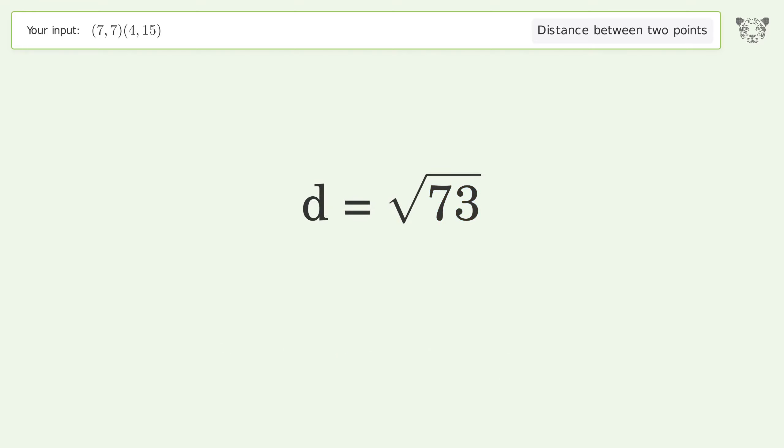And so the distance between the two points is the square root of 73 or 8.544.